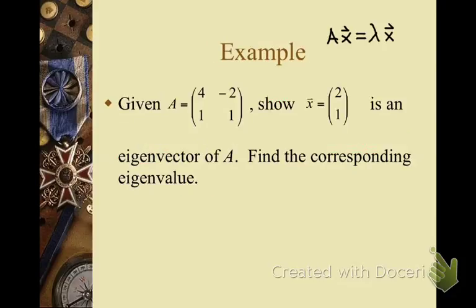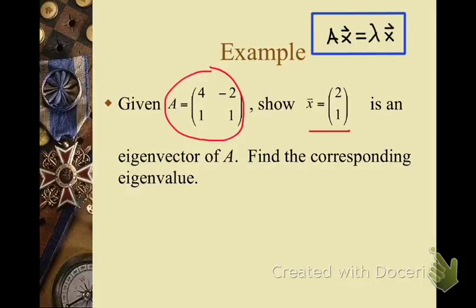In this example we're going to show that the vector x given here is an eigenvector of the matrix A shown here. To show that, we need to show that if I multiply the matrix A by the vector x, I end up getting a scalar times x. Whatever that scalar is, that is the eigenvalue.